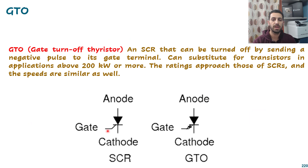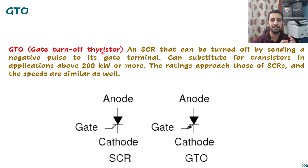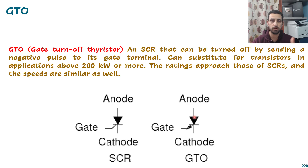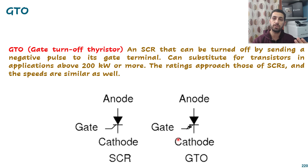We have another type of SCR called the GTO, which is the Gate Turn Off thyristor. It's an SCR that can be turned off by sending a negative pulse to its gate terminal. It can substitute for transistors in applications above 200 kilowatt or more, because we can turn the GTO both on and off. Some transistors can't work at those power levels, which is why we use GTOs. But now with wide bandgap materials and silicon carbide, we can handle that more easily.